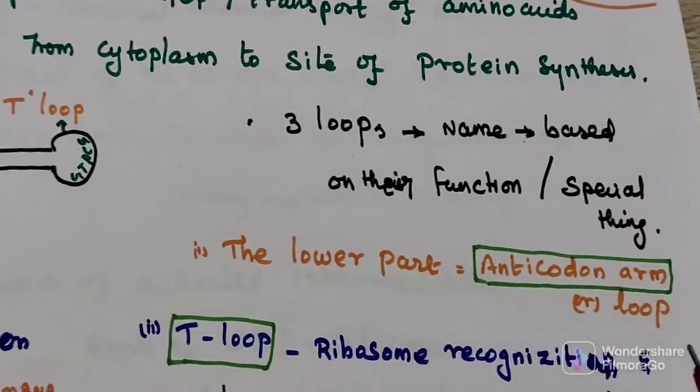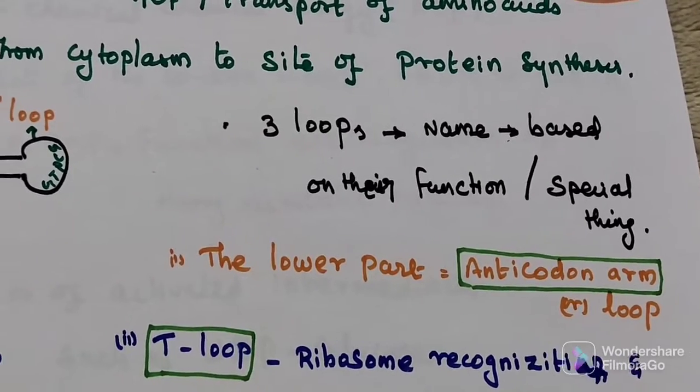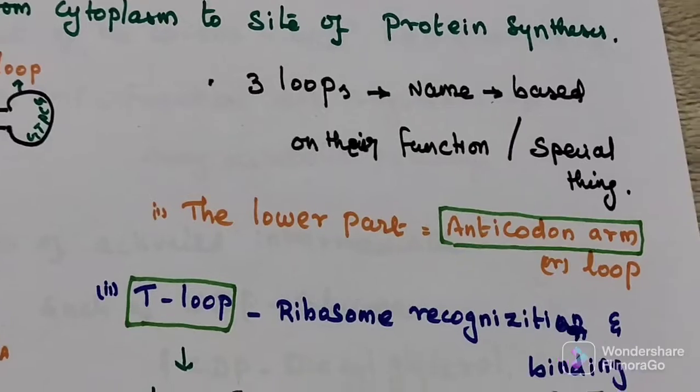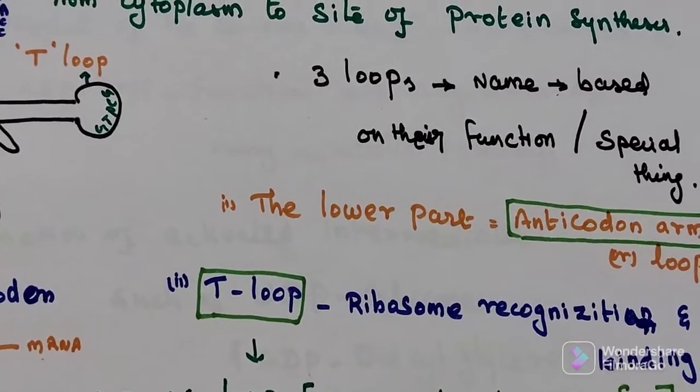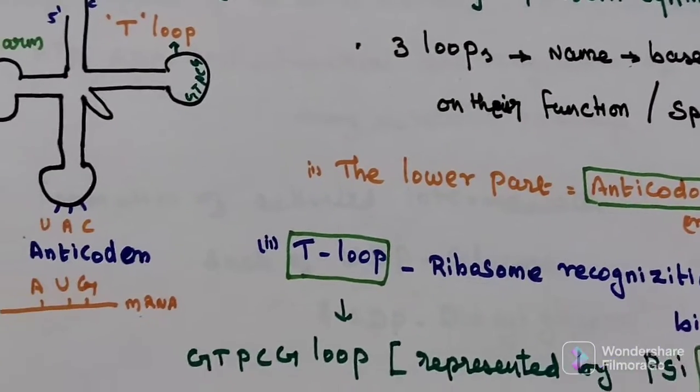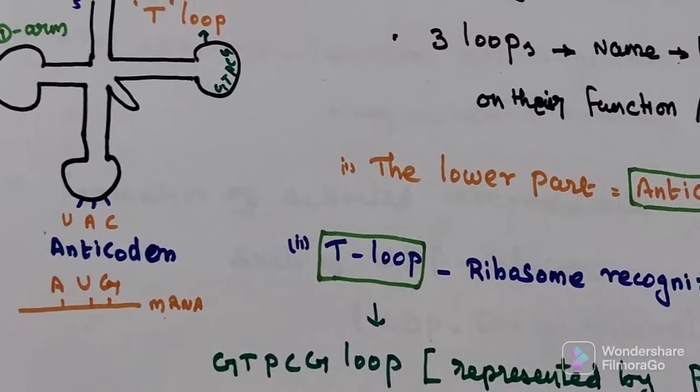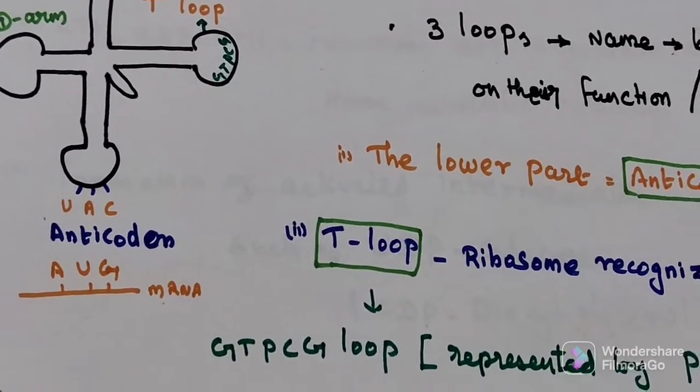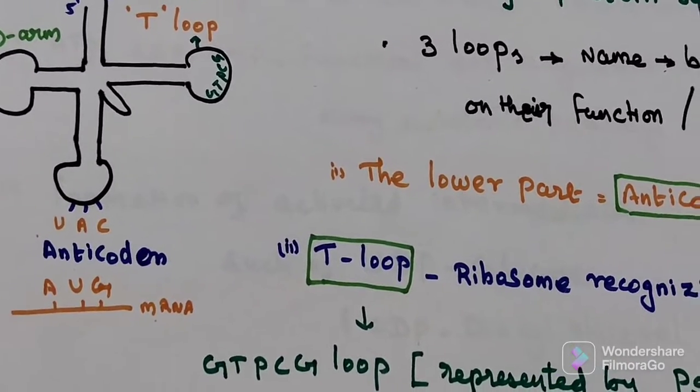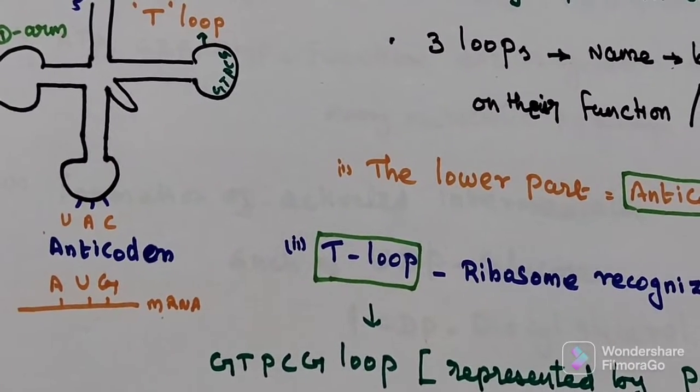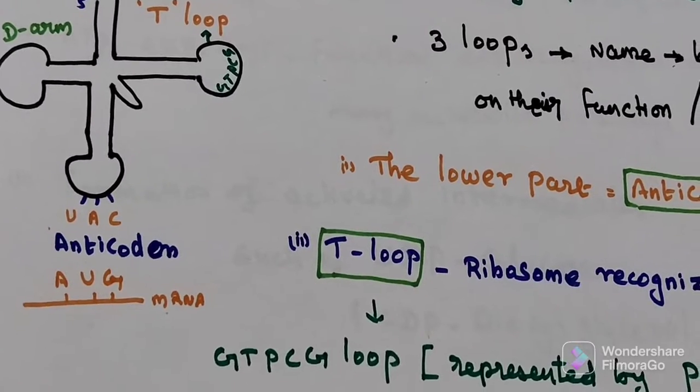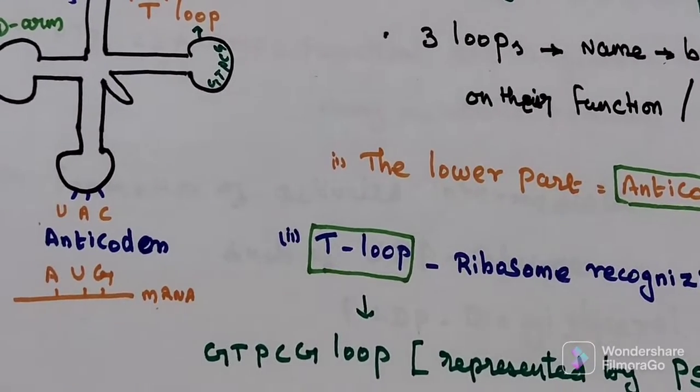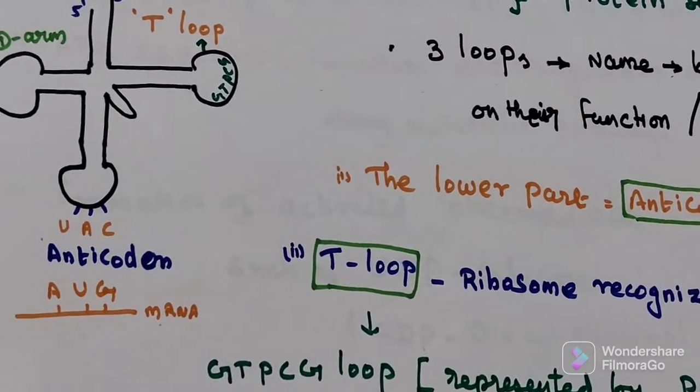The lower part is called the anticodon loop. Codons are presented in mRNA. For example, suppose this mRNA codes for AUG. The anticodon in this loop helps to read this codon. So what would be the anticodon?